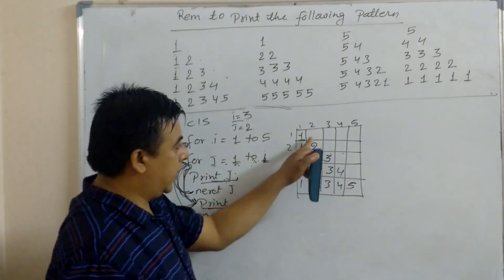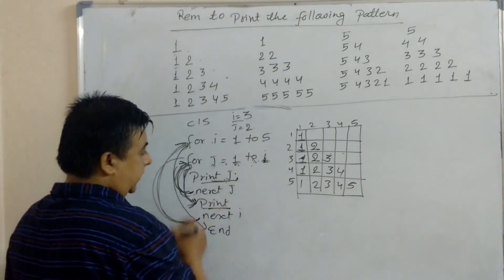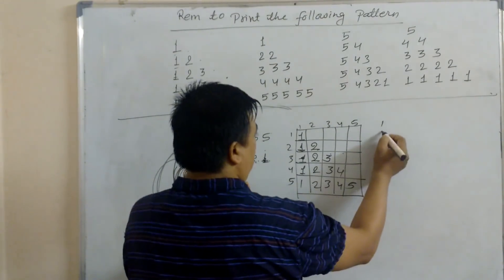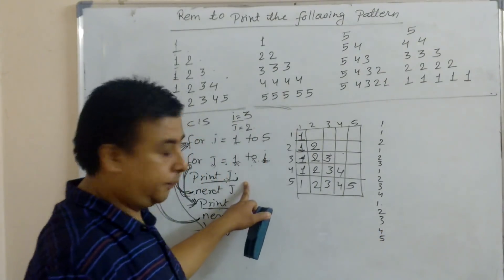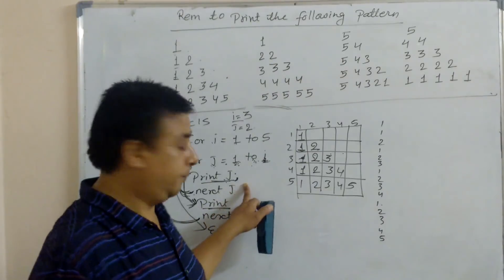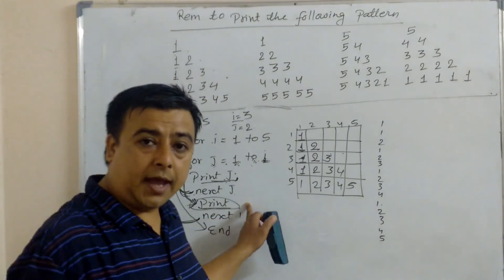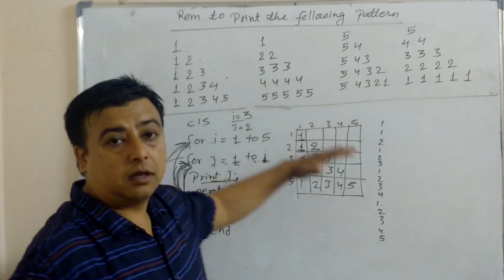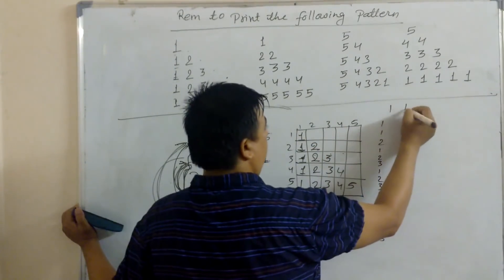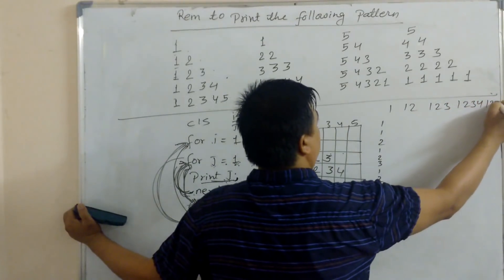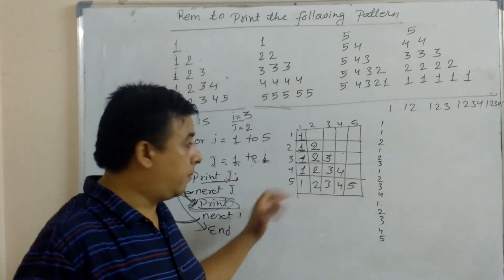So in this format we print: 1 / 1 2 / 1 2 3 / 1 2 3 4 / 1 2 3 4 5. We should not miss the semicolon on PRINT J. If we miss the semicolon, each number prints on its own line instead of staying in one row. And we must not forget the PRINT command between NEXT J and NEXT I — the PRINT command breaks to the next line. If you do not write PRINT there, all numbers print on one continuous line without row breaks. So you must include PRINT to move to the next line.